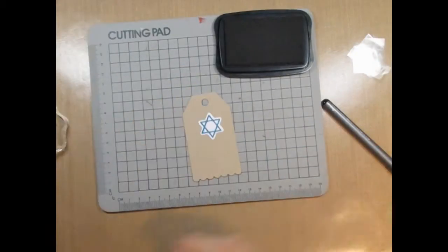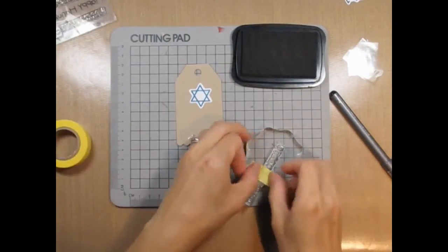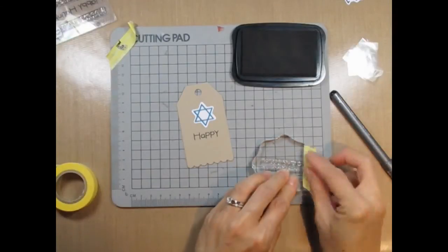For the Star of David I had to pull out the Kibitzing Sampler stamp set so that I could stamp Happy Hanukkah. As you can see I put the sentiment on two lines so I used washi tape to mask off each part.